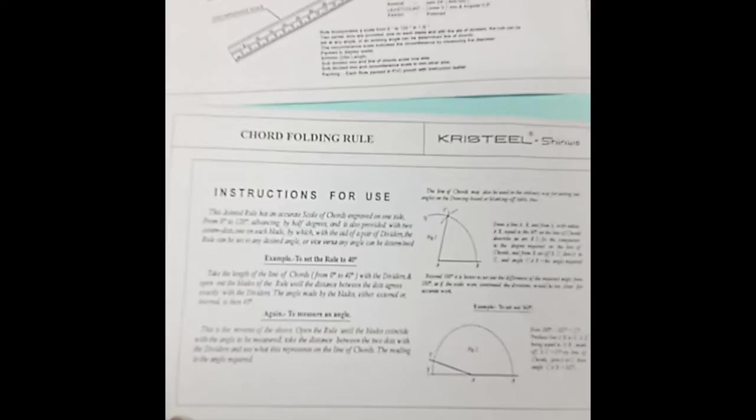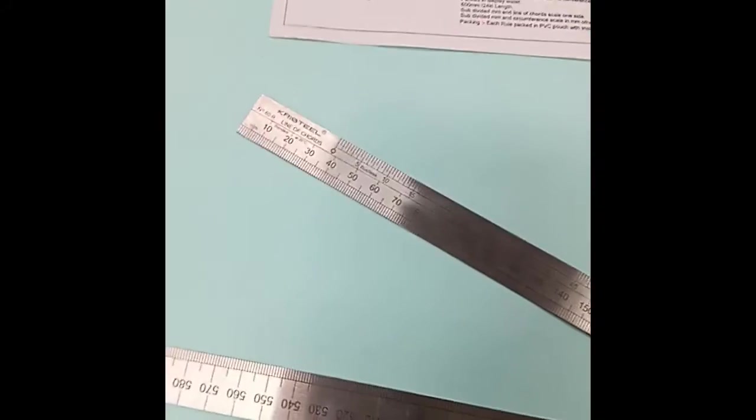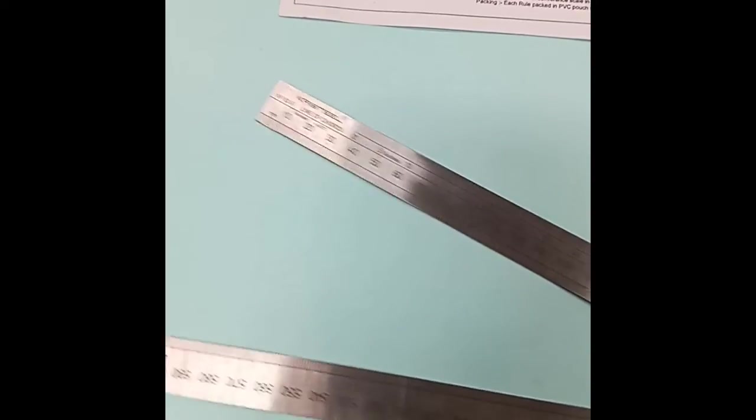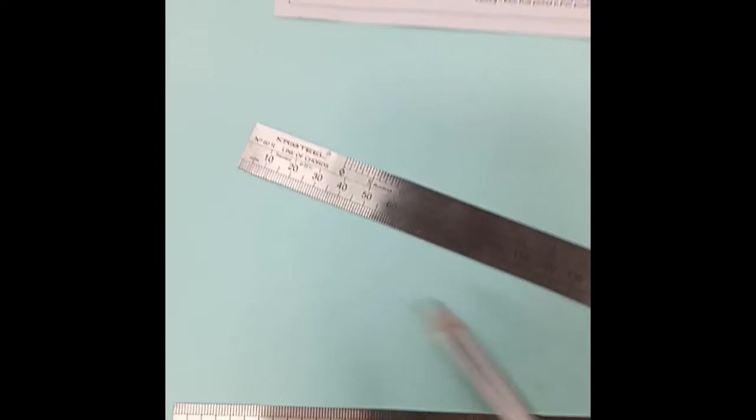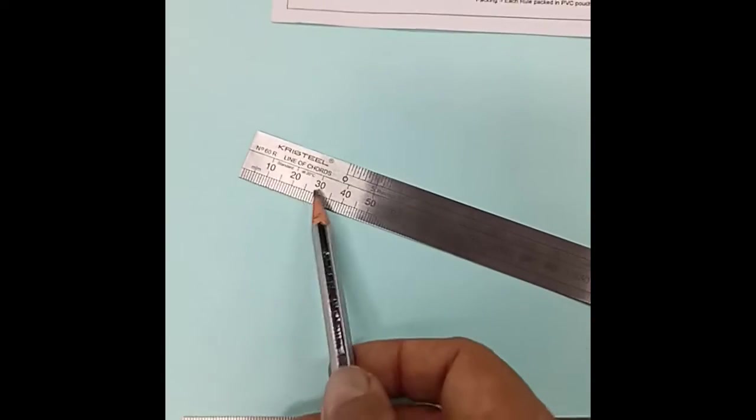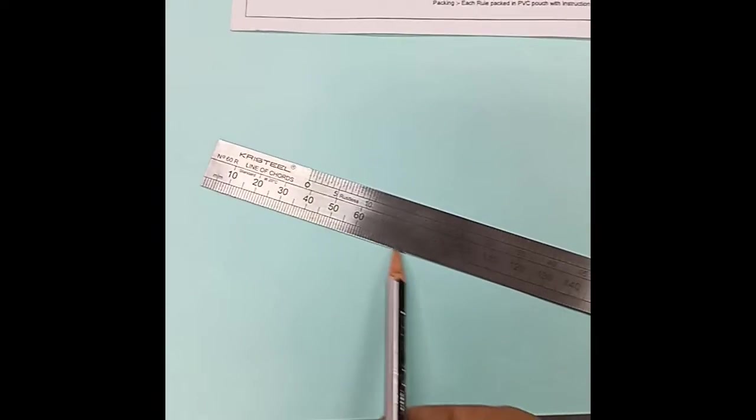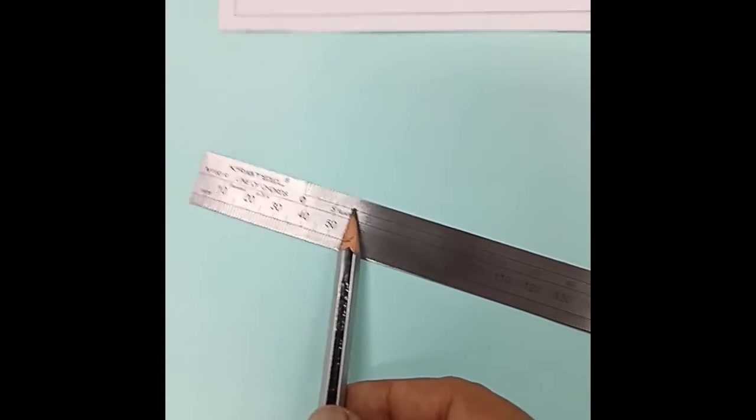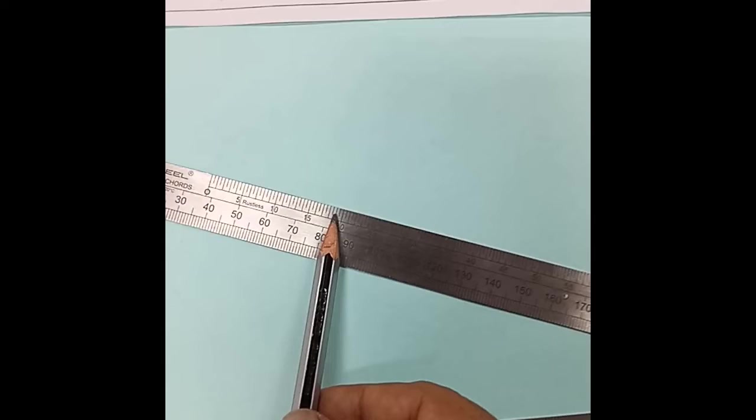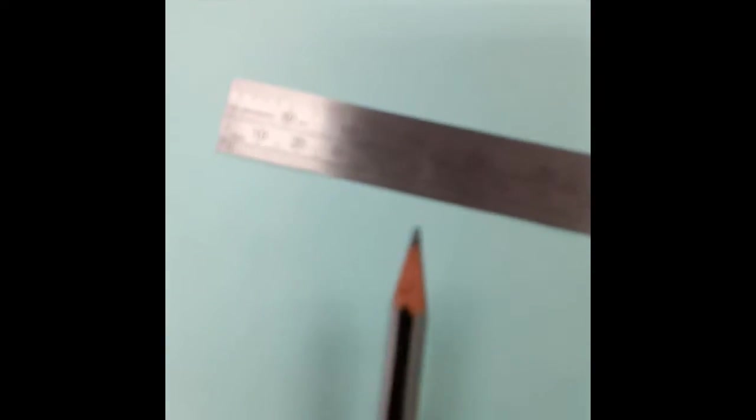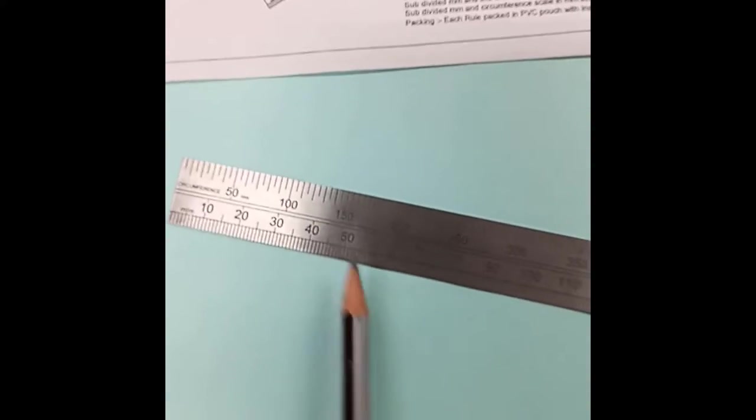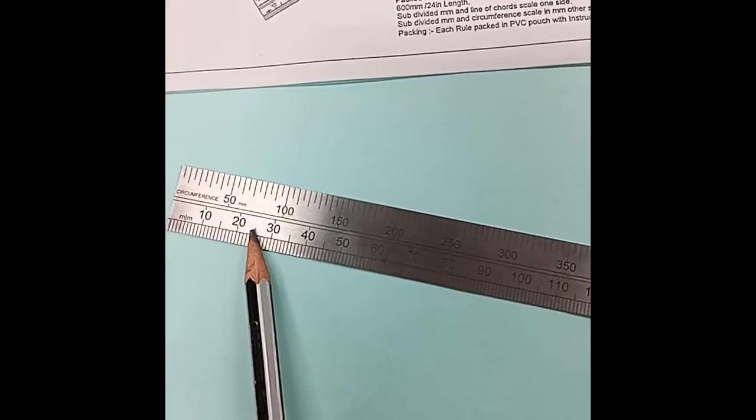This is a graduated scale on both sides. One side has the bottom edge as a metric scale and the top edge has line of chord calculated graduations. The backside has metric regular graduations and conversion of circumference.